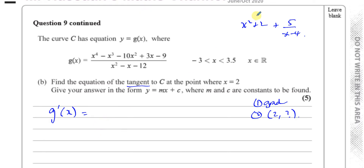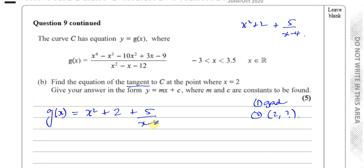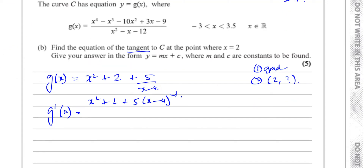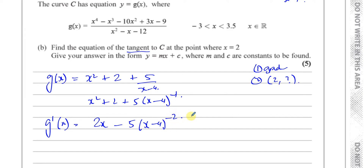The gradient function — we can just differentiate this. We know that g of x is equal to x squared plus 2 plus 5 over x minus 4. I can rewrite this as x squared plus 2 plus 5 times x minus 4 to the power of minus 1. For the first two terms that's 2x. Now I have to multiply by the power, so I get minus 5 times x minus 4 to the power of minus 2. So g dash of x is equal to 2x minus 5 over x minus 4 squared.